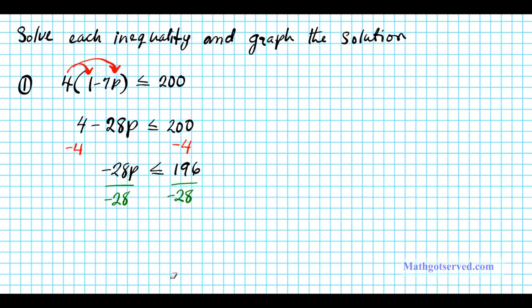And then we'll have p. And here if you divide 196 by negative 28 you end up with negative 7. Remember when you divide two numbers of different signs you always end up with negative.